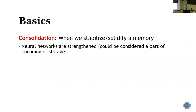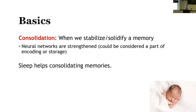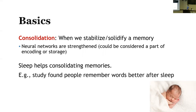Next we're going to talk about storage and some part of consolidation. Consolidation is when we stabilize and solidify information in memory. In this process, our neural networks are strengthened. This could be considered a part of encoding or storage — that's why it's in between in the process.